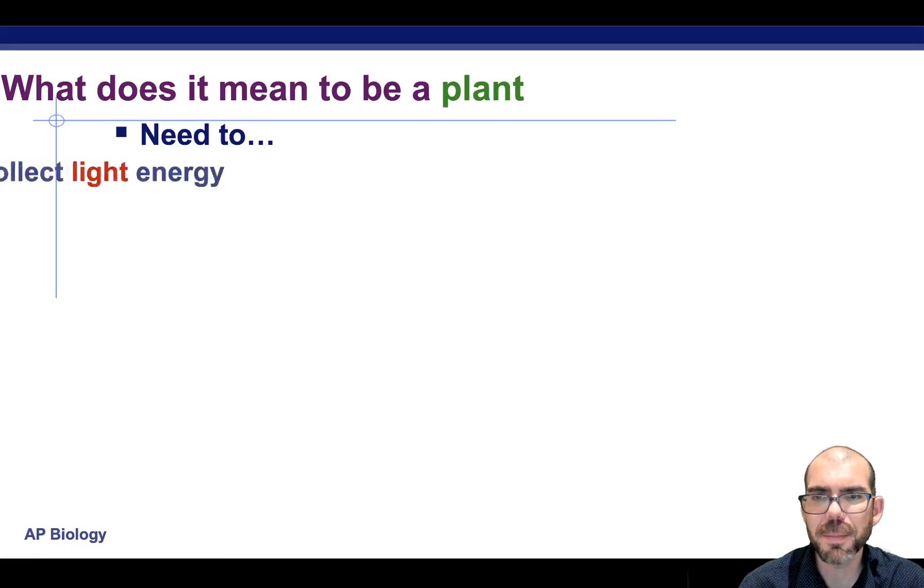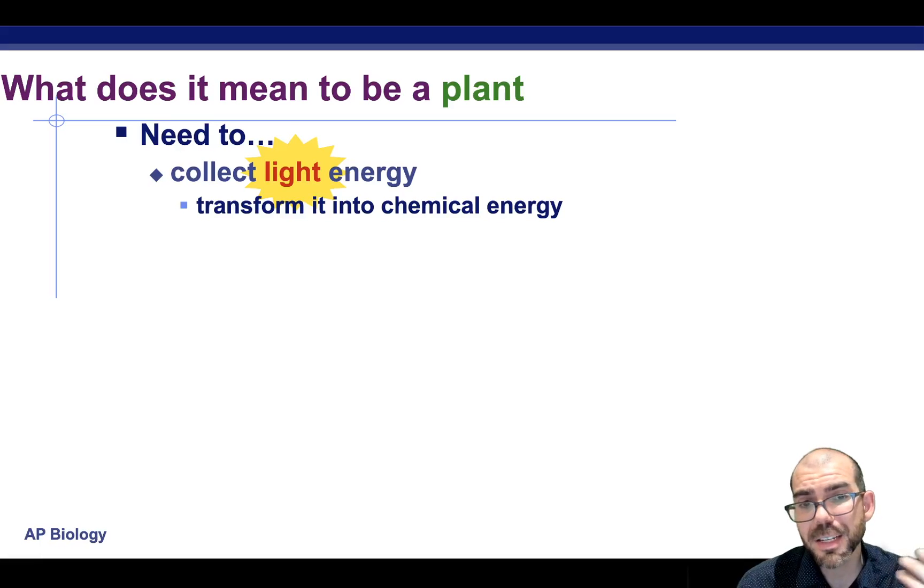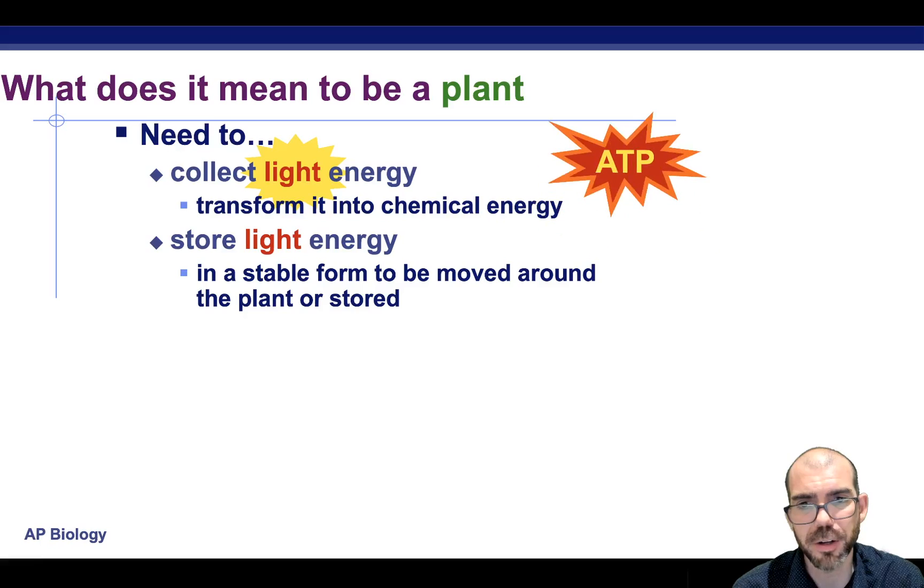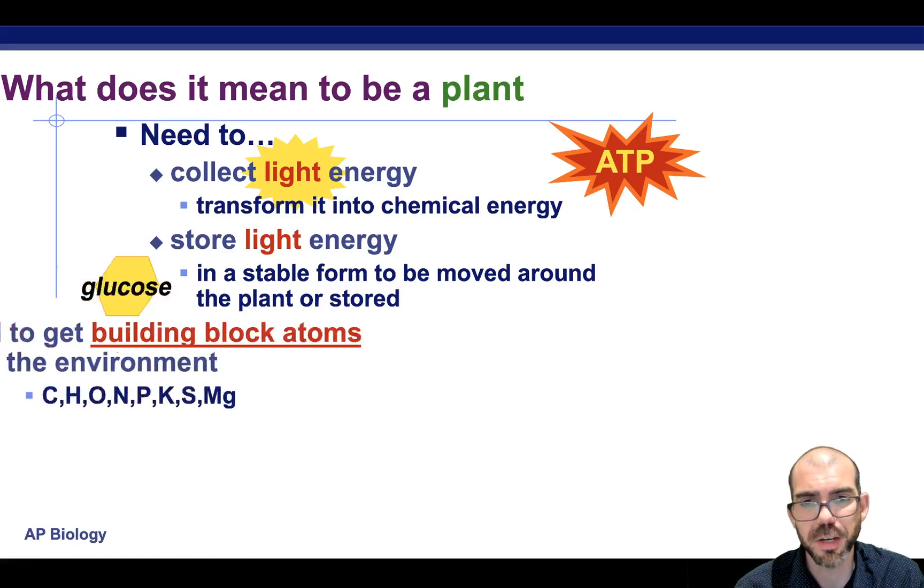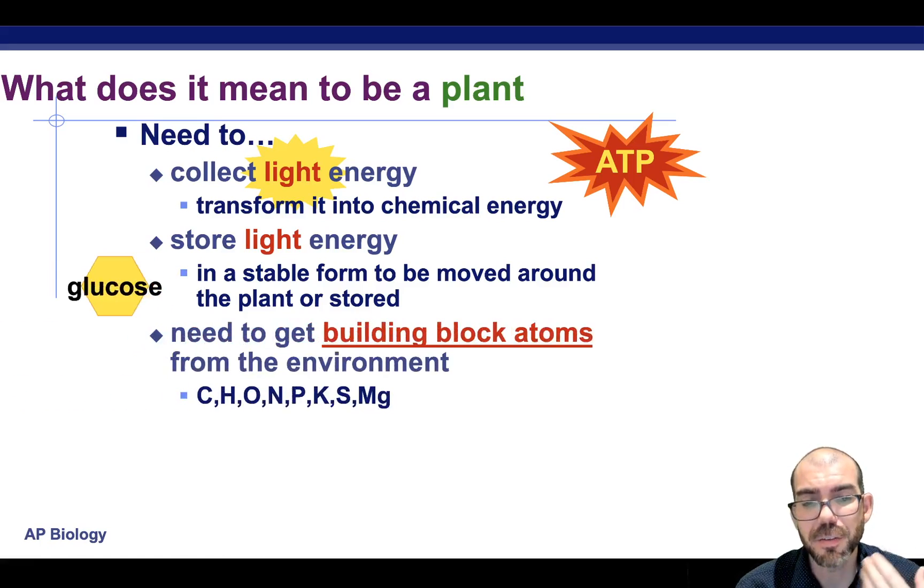So we want to know, what does it mean to be a plant? Plants need to be able to collect light. They're converting solar energy into chemical energy. They need to be able to somehow store this light energy and use it and move it around from one part of the plant to another to accomplish the task of building not only glucose, but the building block atoms that make up all the macromolecules that make up plants.